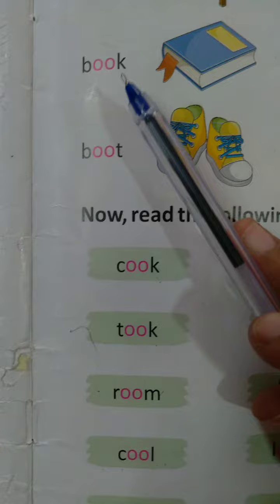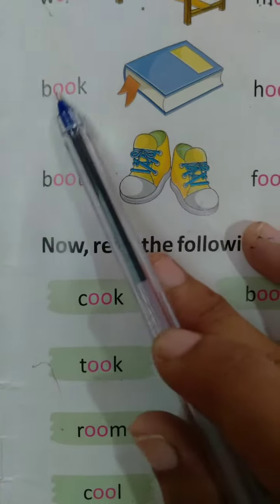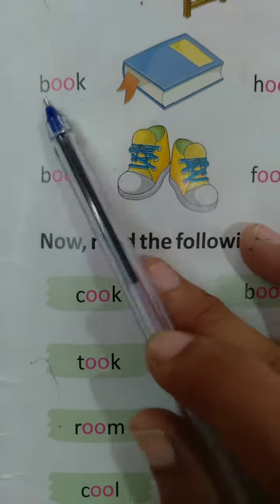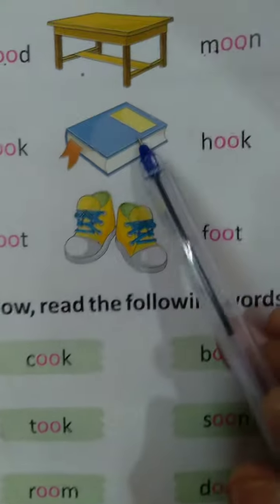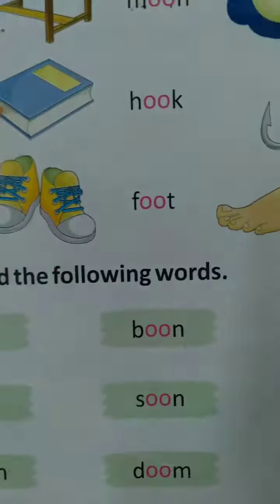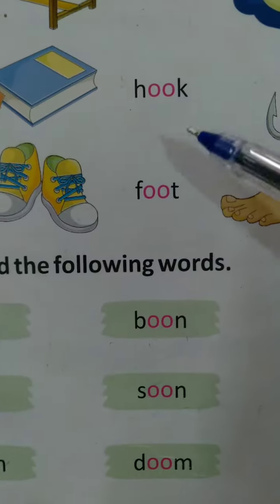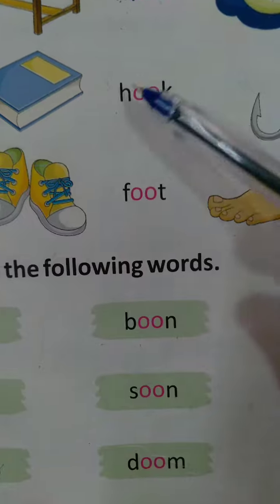Next is Book. B double O K — Book. This is a book. Next is Hook. H double O K — Hook.